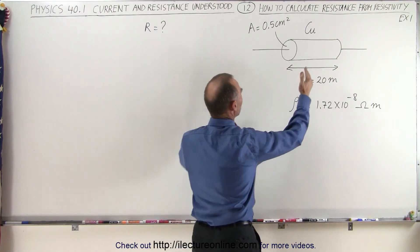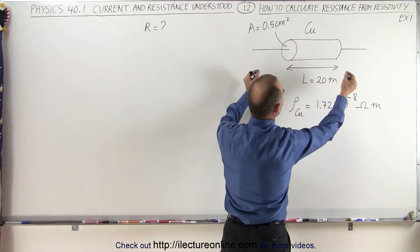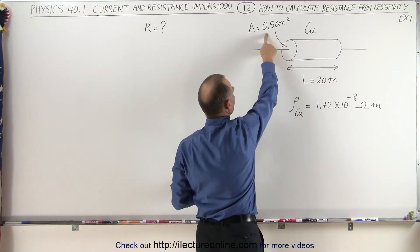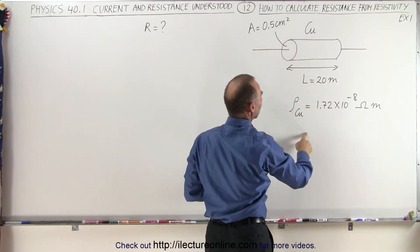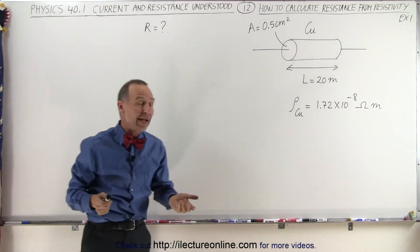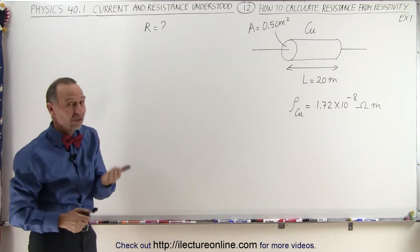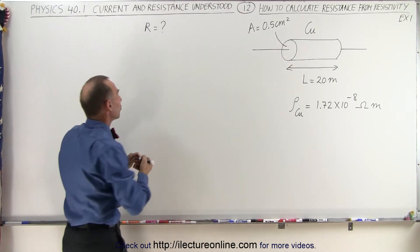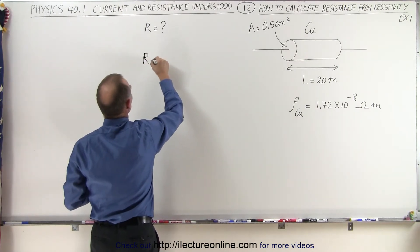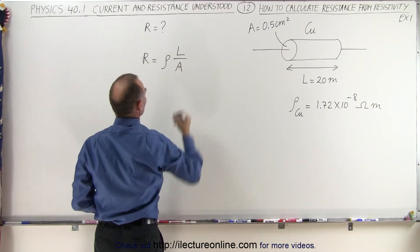In this case we're going to determine the resistance of a 20 meter long piece of copper that has a cross-sectional area of 0.5 square centimeters and a resistivity of 1.72 times 10 to the minus 8 ohm·meters. To calculate the resistance, we use the equation: resistance is equal to resistivity times length divided by the cross-sectional area.